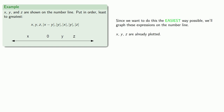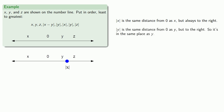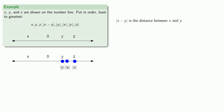We've already plotted x, y, and z. The absolute value of x is the same distance from 0 as x is, but always to the right — so that's going to be about here. The absolute value of y is the same distance from 0 as y, but since y itself is already on the right, absolute value of y and y are going to be in the same place. Similarly, the absolute value of z is the same distance from 0 as z, but to the right — and since z is already on the right, it's in the same place as z. The only complicated one is the absolute value of x minus y, which represents the distance between x and y.